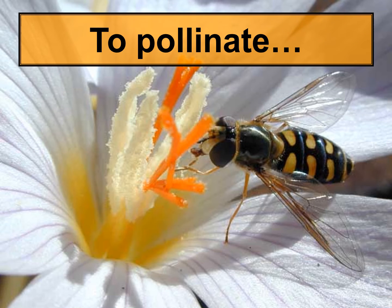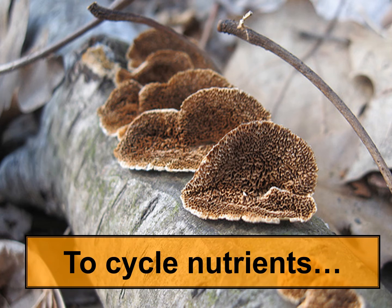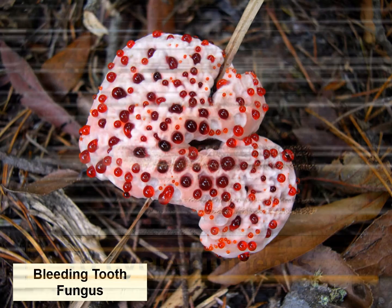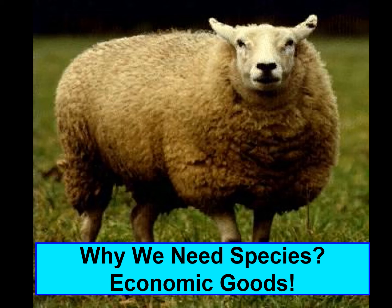Bees, moths, and butterflies are all pollinators, assisting with the reproduction of plants that are edible for humans. Fungi are super important in cycling nutrients so they can get back into the ground or waterways to help other things grow. It's definitely important that we protect these species so nutrients return to the ground. We also use other species to control agricultural pests to ensure food production.